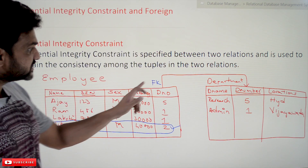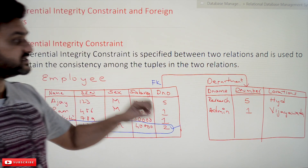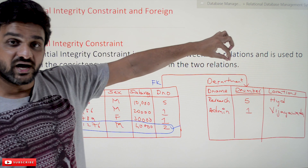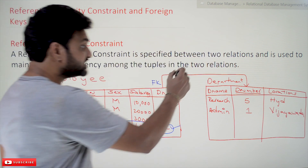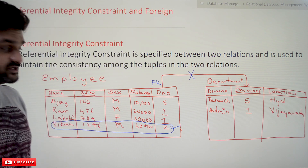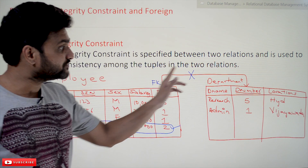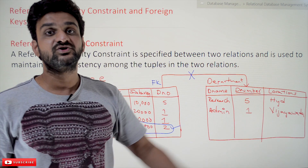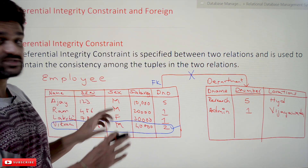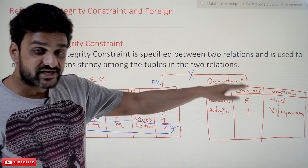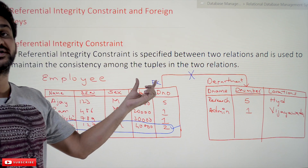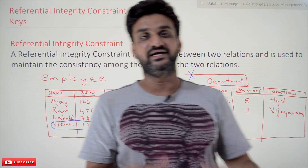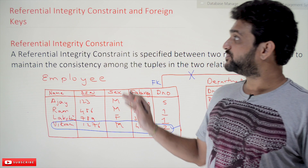That is what we call referential integrity constraints. In our previous classes we covered this relationship, but we had only created the two tables — the relationship between them was not established. In the next video, we will create the tables again with this foreign key integrity constraint by using the FOREIGN KEY keyword to establish the relationship.